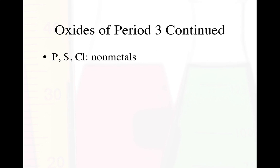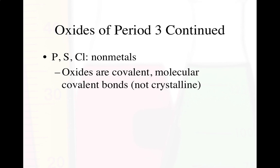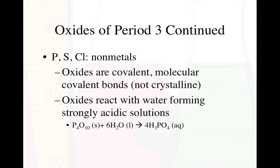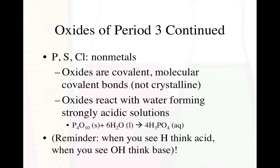Then we get to our nonmetals — phosphorus, sulfur, and chlorine. Their oxides are covalent, meaning molecular covalent bonds, not crystalline. Their oxides react with water forming strongly acidic solutions. So we went from basic with the metals to acidic with the nonmetals — that's a trend to memorize. For instance, P₄O₁₀ forms phosphoric acid, H₃PO₄. Remember: when we see H, think acid; when we see OH, think base.